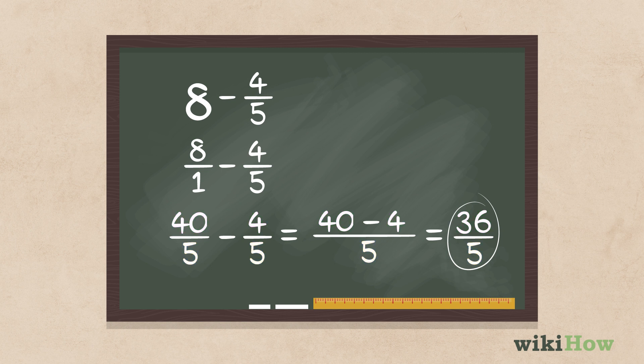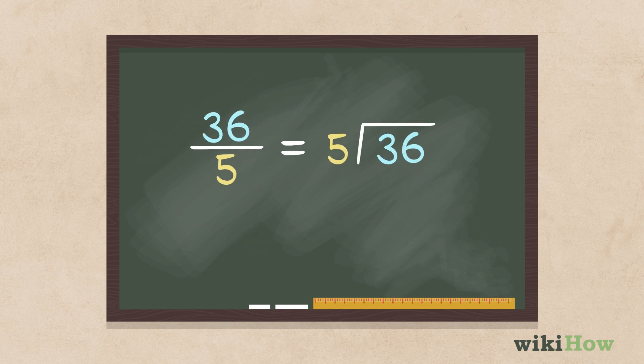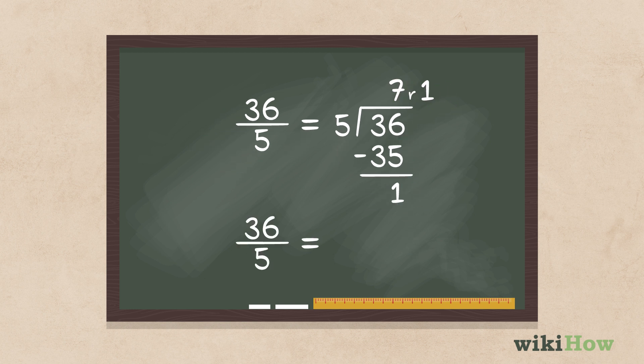If you want to convert the answer to a mixed fraction, divide the numerator by the denominator. The quotient will become the new whole number, while the remainder will become the numerator of the new fraction. In this case, 36 over 5 equals 7 with a remainder of 1, giving you the mixed fraction of 7 and 1 fifth.